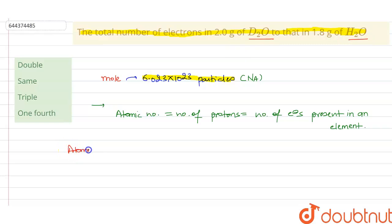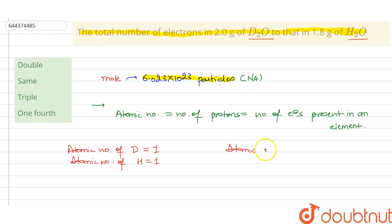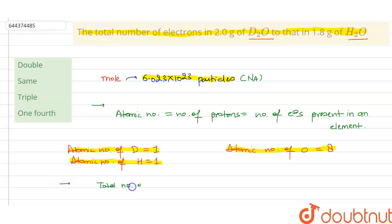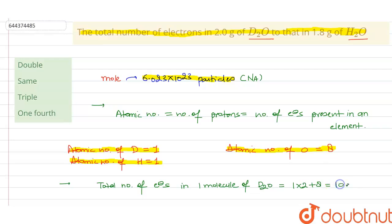We have been given the molecules D2O and H2O. The atomic number of deuterium is 1, the atomic number of hydrogen is equal to 1, and the atomic number of oxygen is equal to 8. This tells us that the number of electrons present in deuterium is 1, in hydrogen is 1, and in oxygen is 8. So if we want to find the total number of electrons in one molecule of D2O, it will be 1 + 1 + 8, that is 10 electrons.